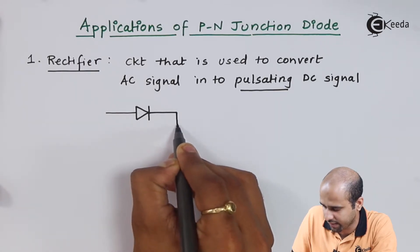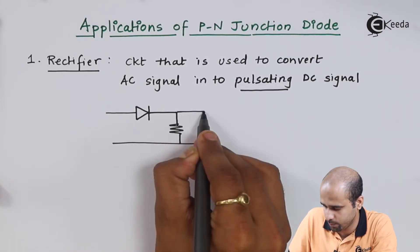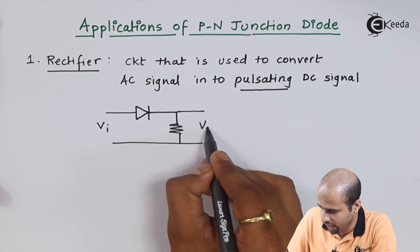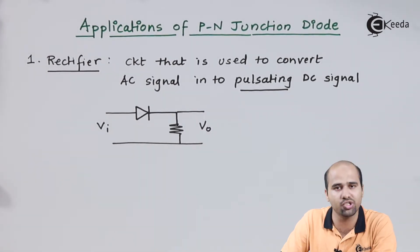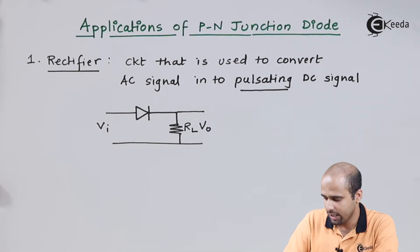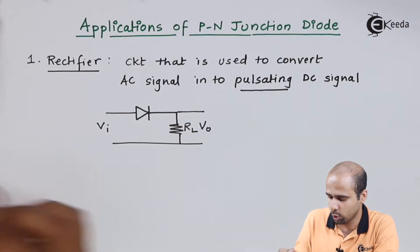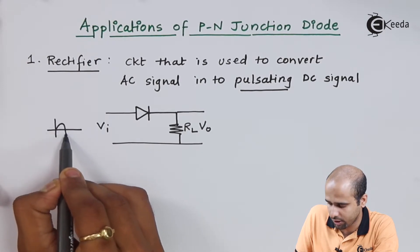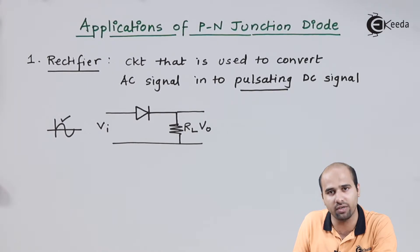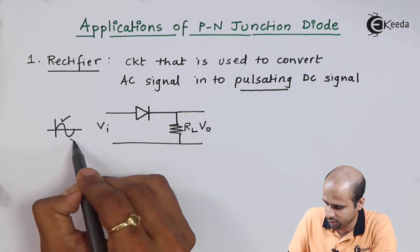This is a simple rectifier I am forming with a simple load, which is a resistor. If I am giving input VI, my output is coming across the resistance RL. Since the diode is a unidirectional device, only in the positive half cycle of the input signal will this diode conduct. So for the positive half cycle, diode D1 will conduct, and for the negative half cycle, diode D1 will be reverse biased and will not conduct.